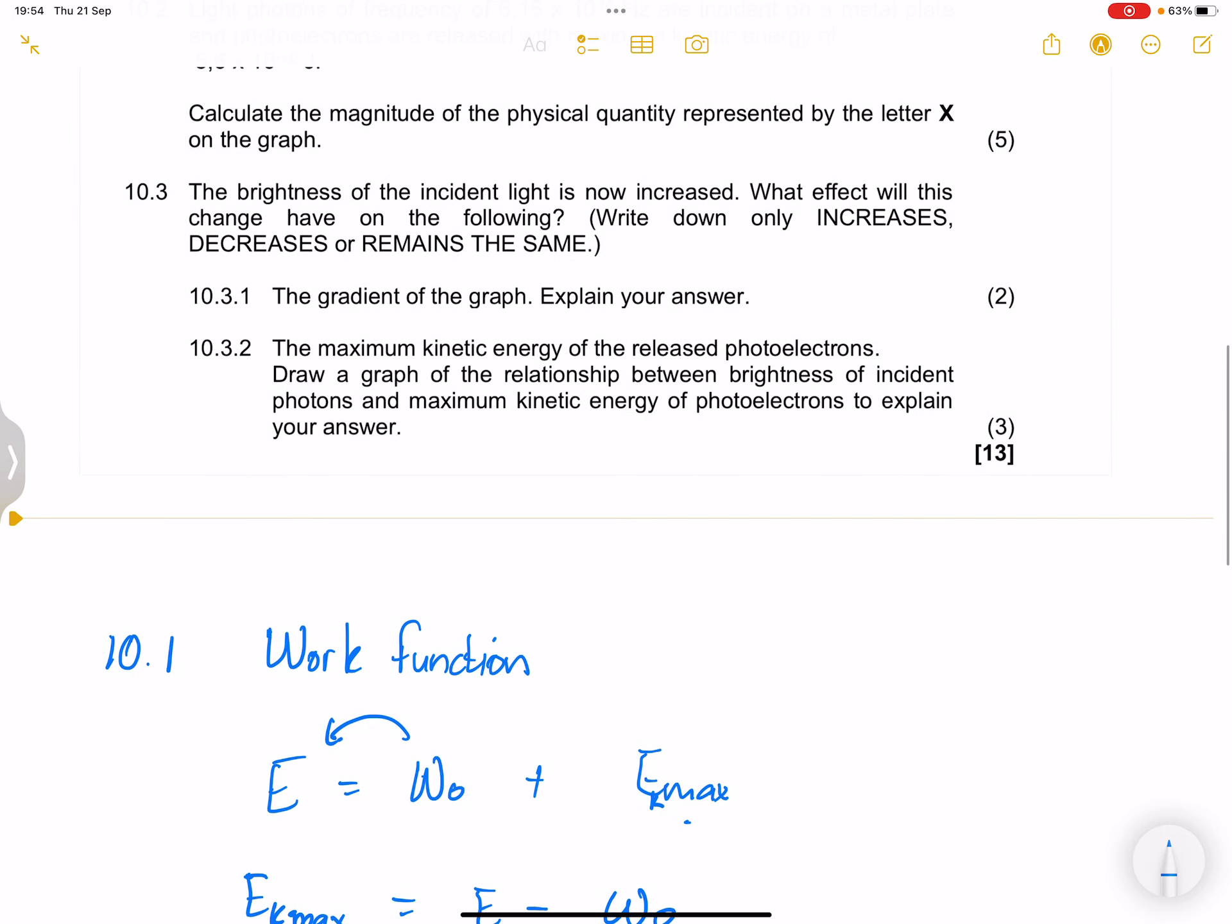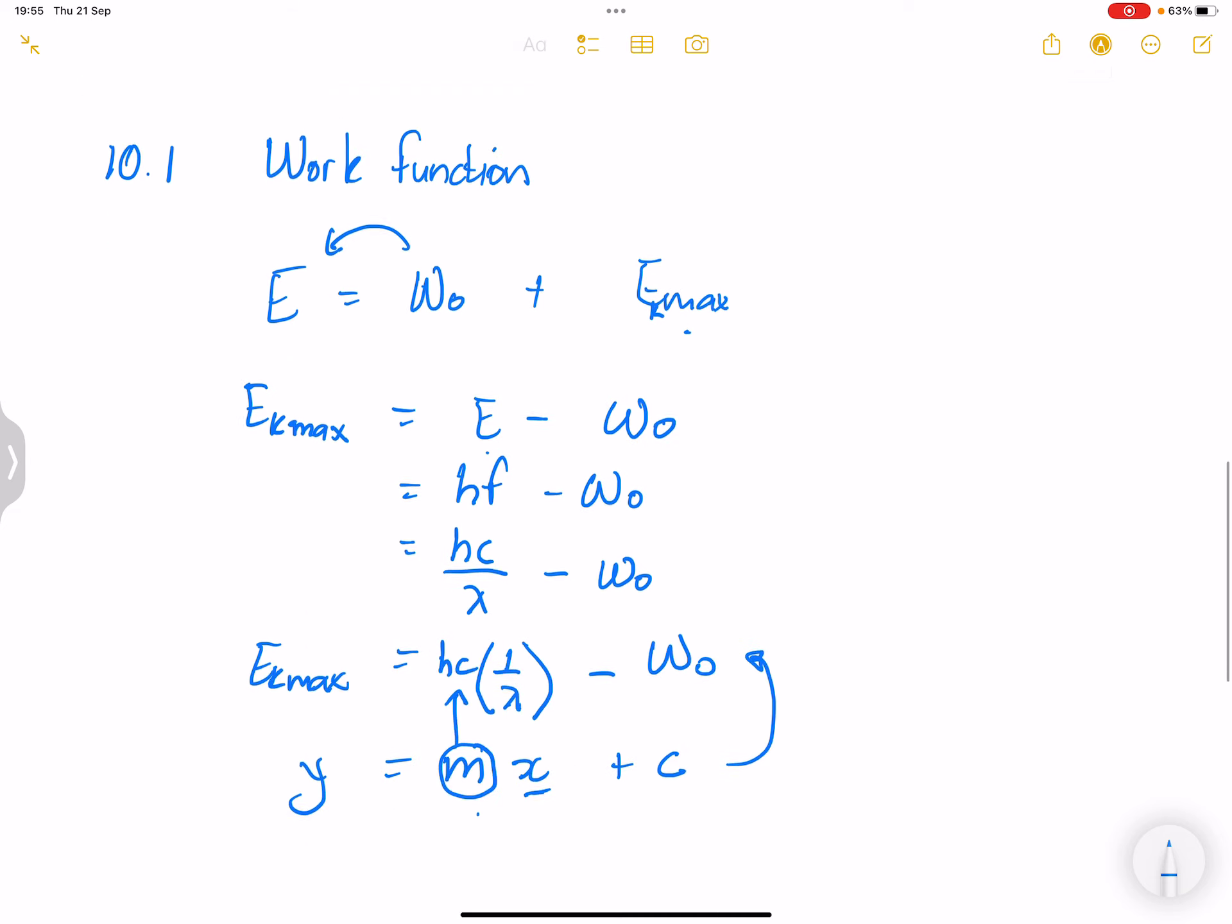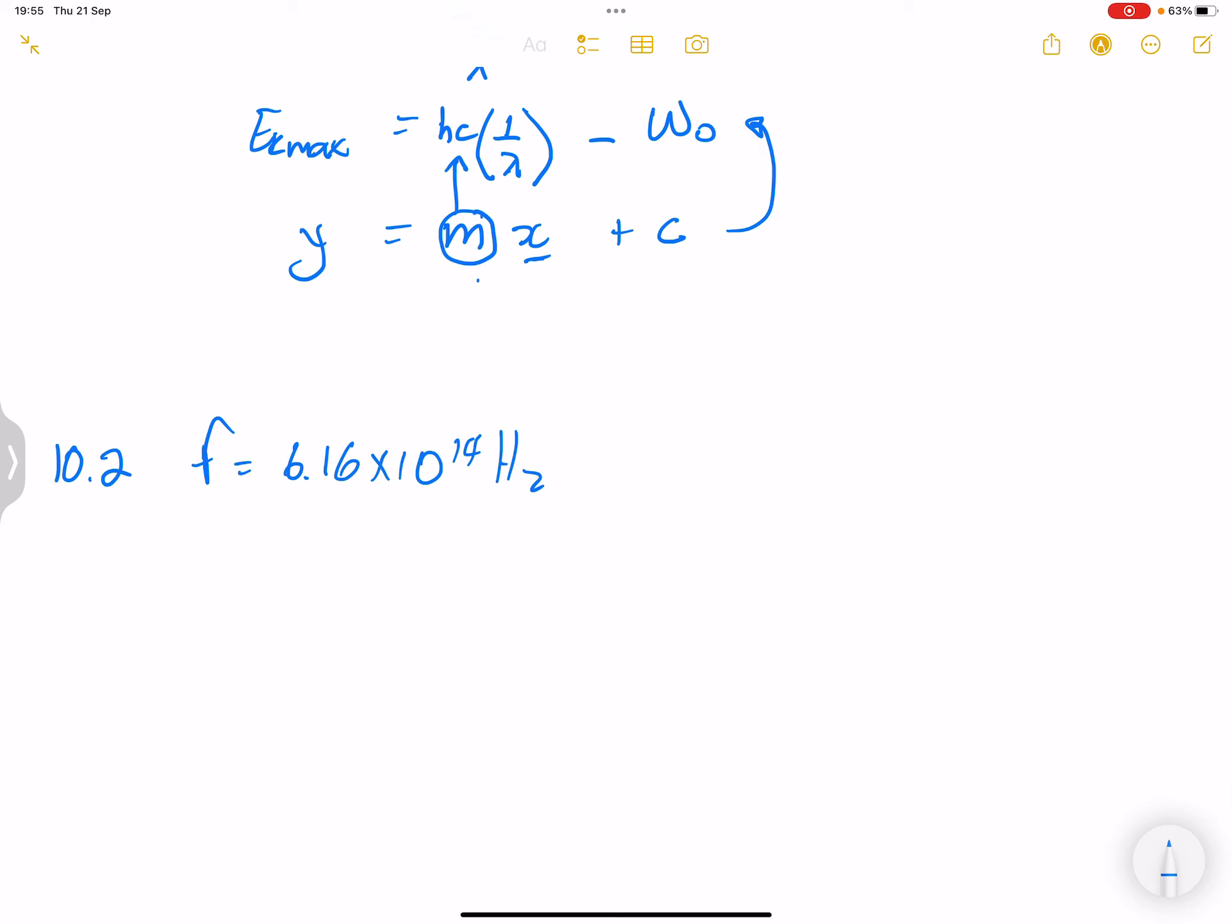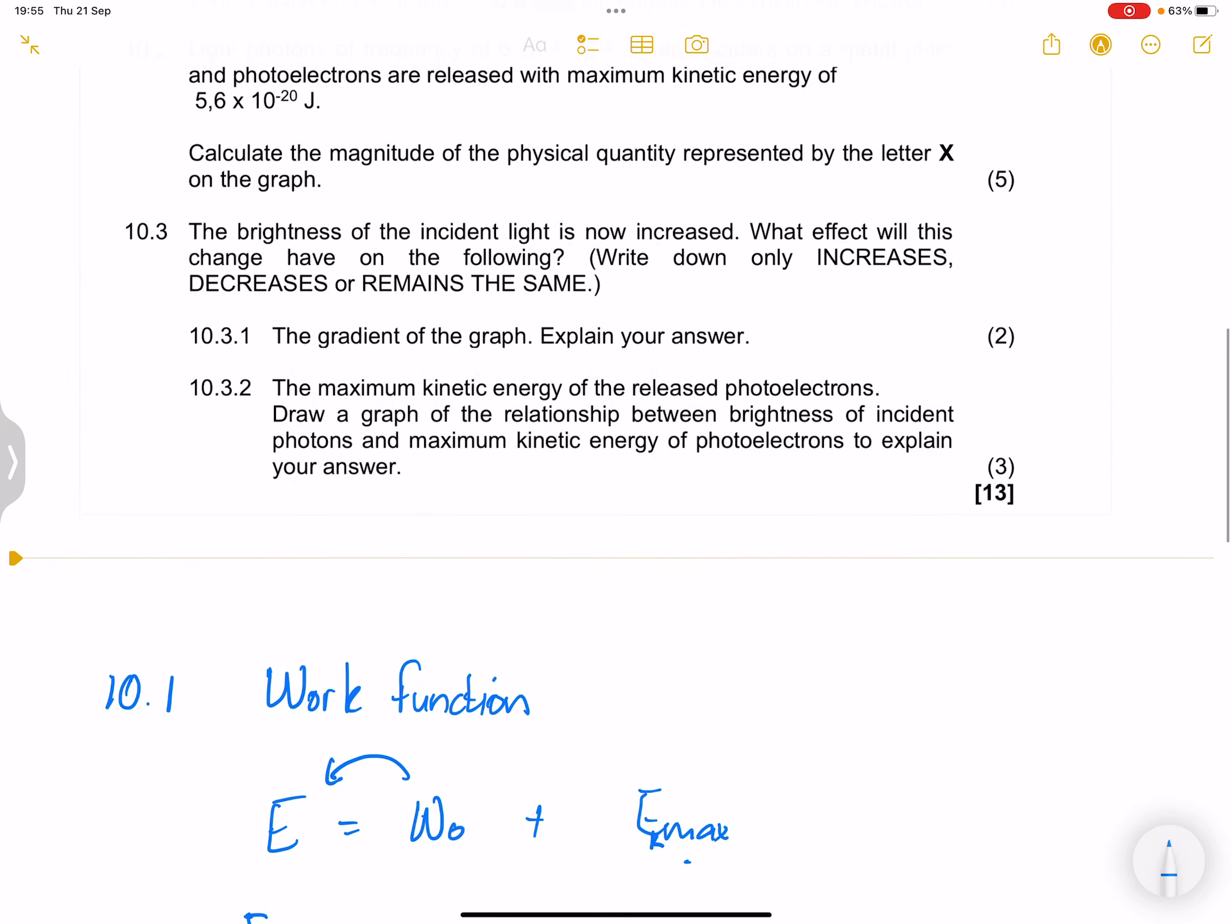And in this case, they are telling us that they are incident on a metal plate, of photoelectrons that are released with a maximum kinetic energy of 5.6 exponent negative 20. So in this case, we know that EK max would be 5.6 exponent minus 20. And of course, this is in joules. Now, in this case, what did they want?